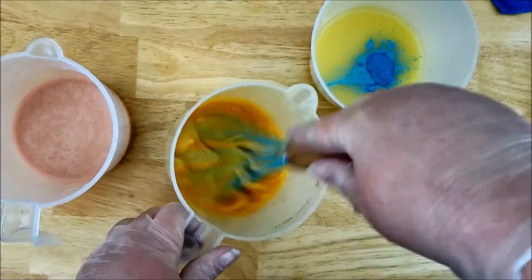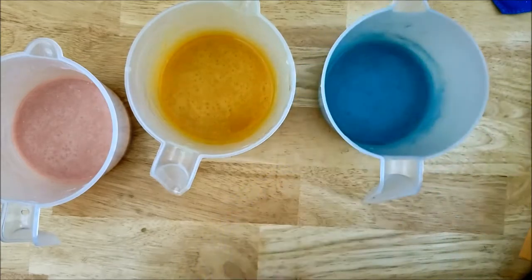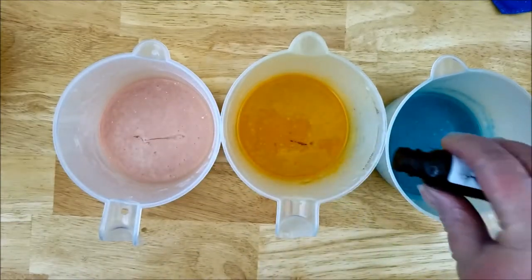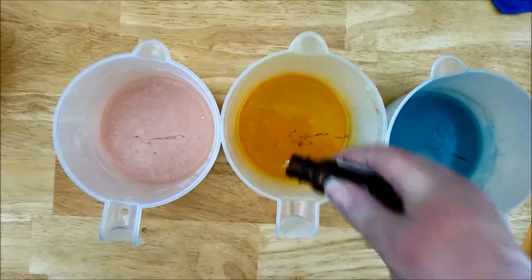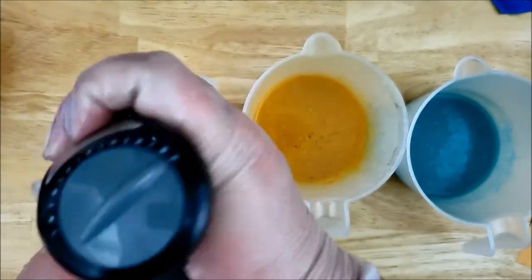I'm just going to mix these in by hand first. This helps the mica not turn into a big powdery cloud. If I put the stick blender in right away, sometimes it kicks the powder up in the air. And blending it by hand first helps reduce that.